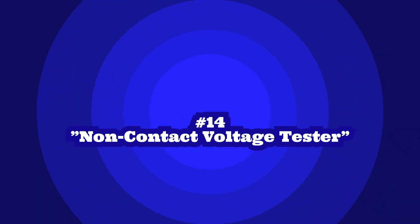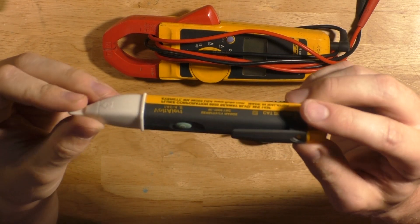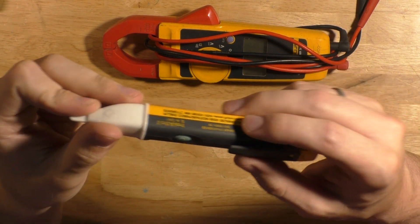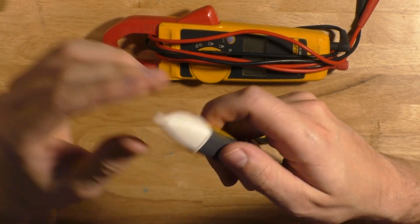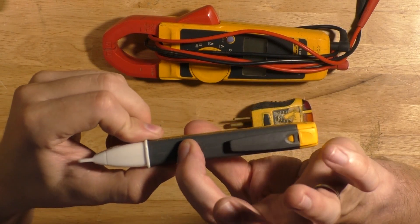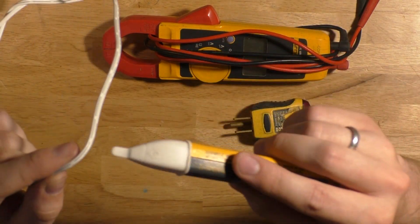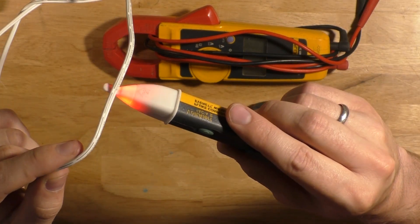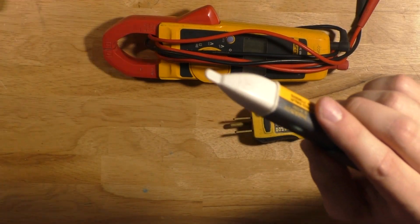For 14 I am putting a non-contact voltage tester also called a tick tester or a chicken stick. As the name implies, this tool is used to test for the presence of voltage on a circuit and will light up and beep if there is power. I'll just turn this on here quick. I'll grab my lamp cord here so we can tell that there is electricity running through this cord right now.